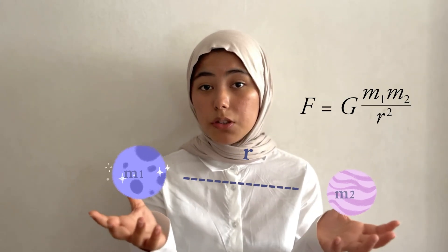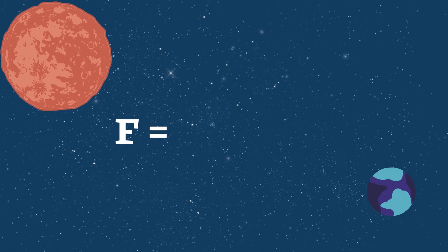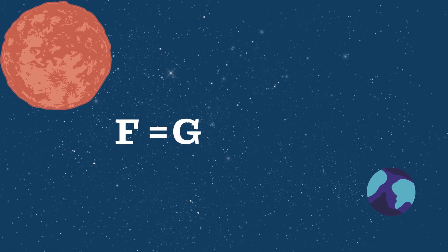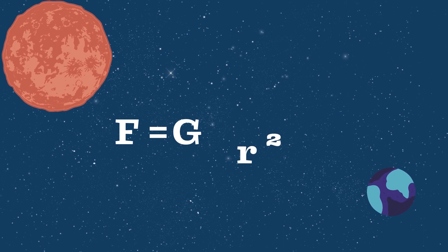In Newtonian gravity, objects with mass attract each other with an inversely proportional force, dependent on the square of their distance and product of their masses.